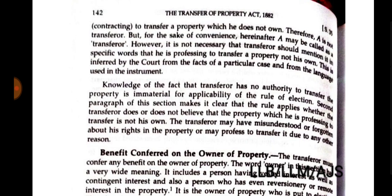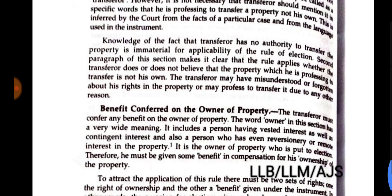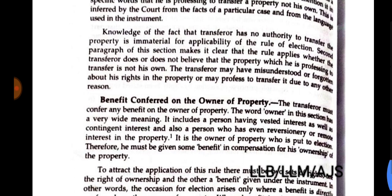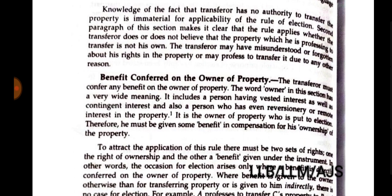Knowledge of the fact that the transferor has no authority to transfer the property is immaterial for the applicability of the rule of election. The second part of this section makes it clear that the rule applies whether or not the transferor believes that the property he is professing to transfer is not his own. The transferor may have misunderstood or forgotten about his rights, or may profess to transfer it for any other reason.